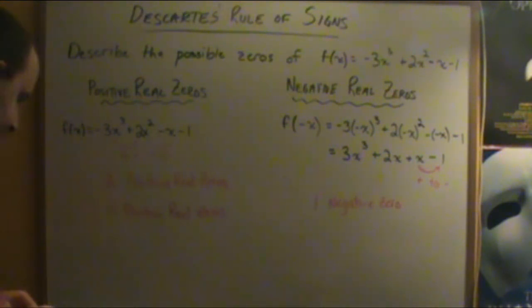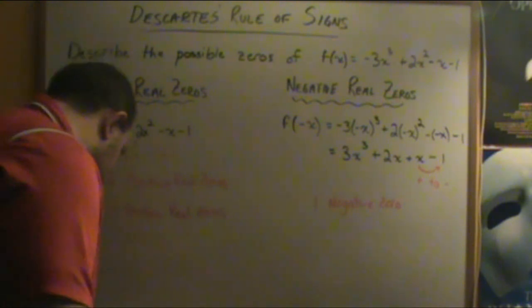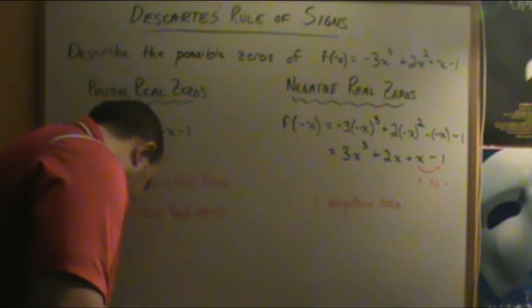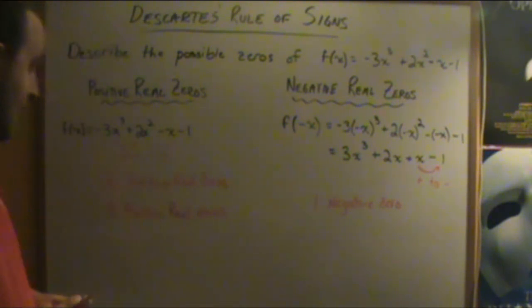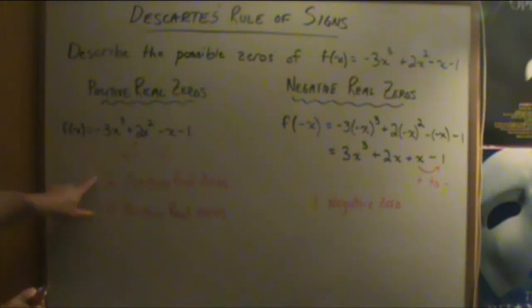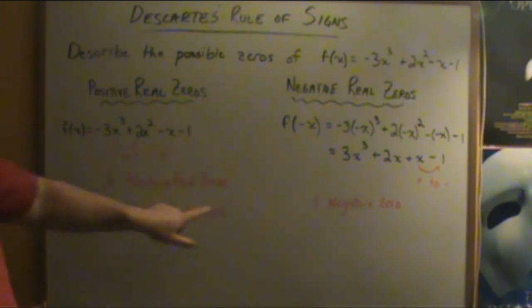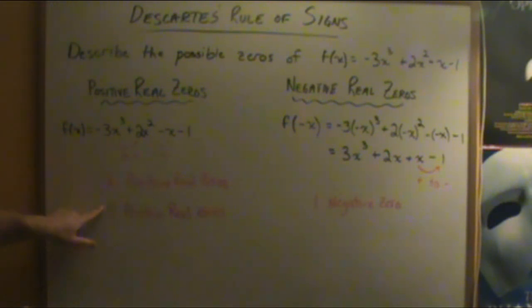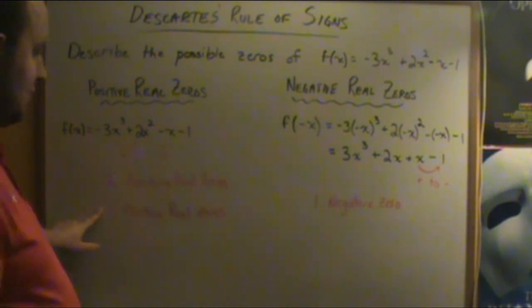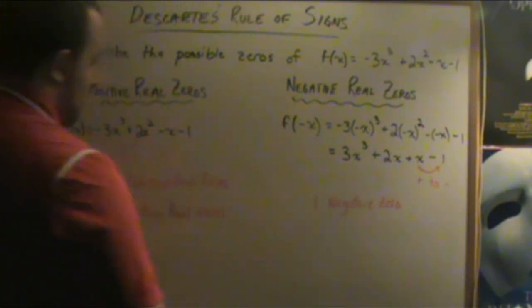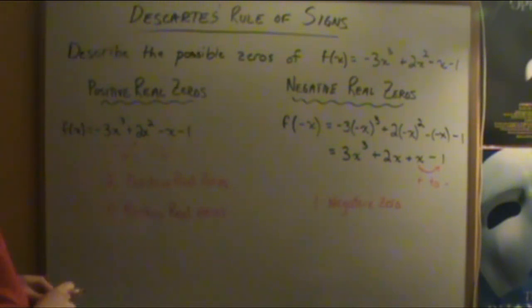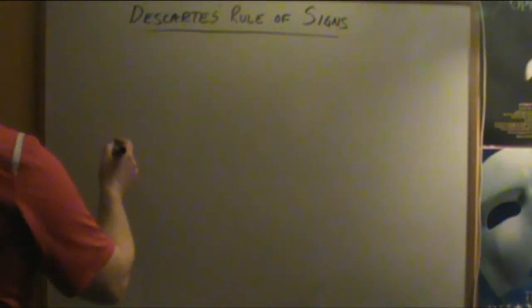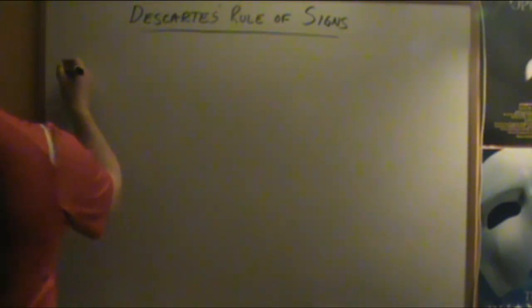And that's how we find this out. So the function has two or zero positive real zeros, and one negative zero.